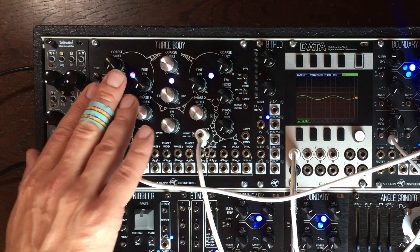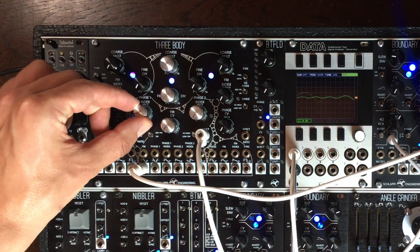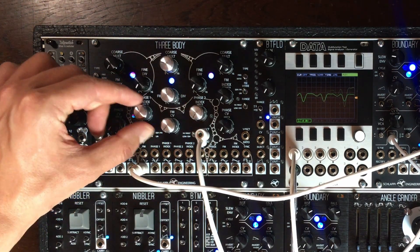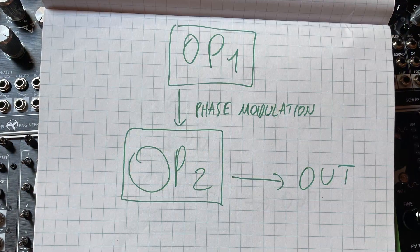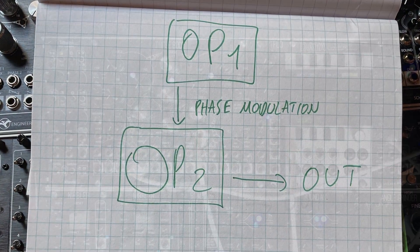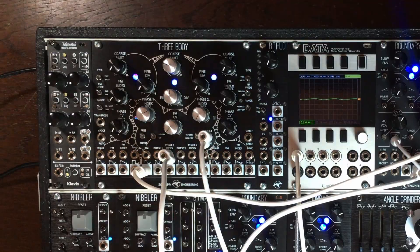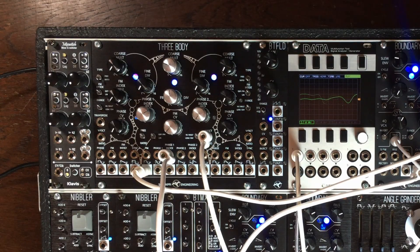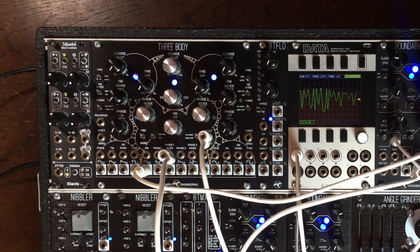We could have one modulating two, and we could use that same envelope to decide how much this is modulating two, with the phase index — which gives us the typical two-operator FM.